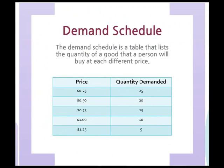The demand schedule is a table that lists the quantity of a good that a person will buy at each different price. It compares the price of a good with the quantity demanded by the consumers. This graph is an example involving the price of cookies. As you can see, as the price increases, the demand decreases.